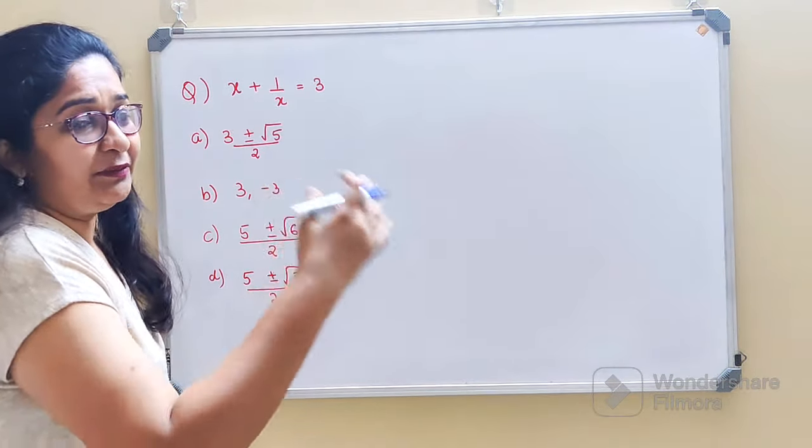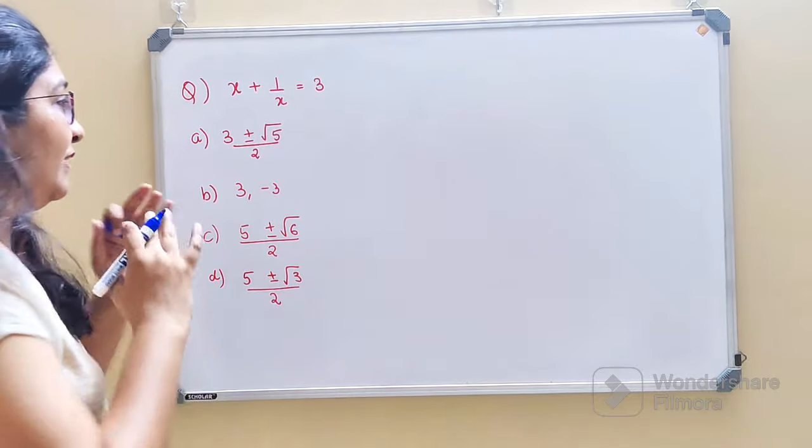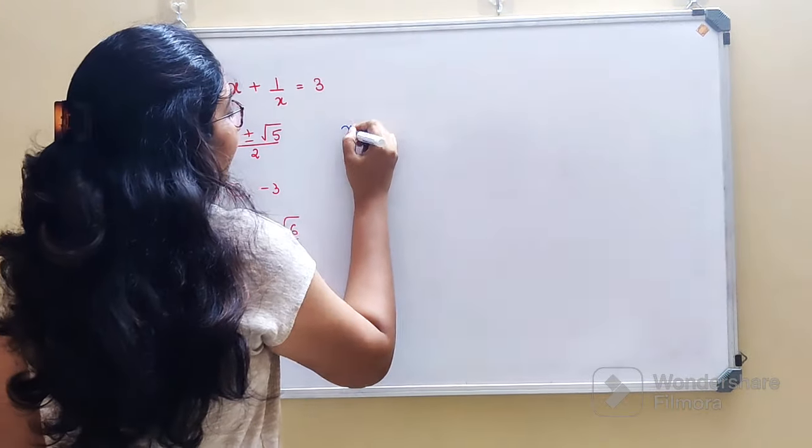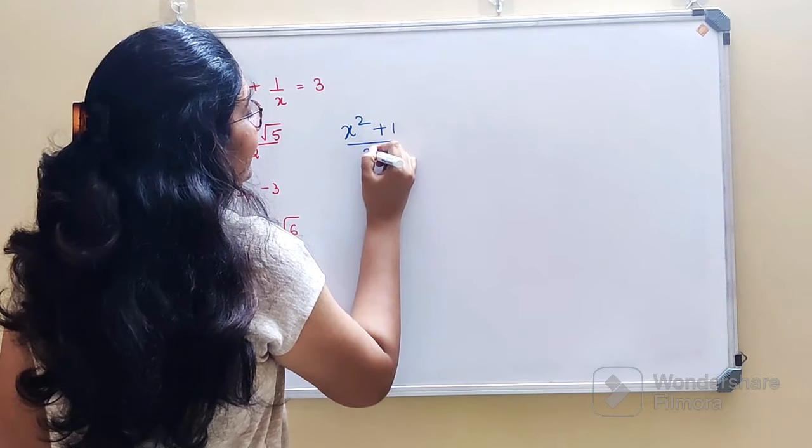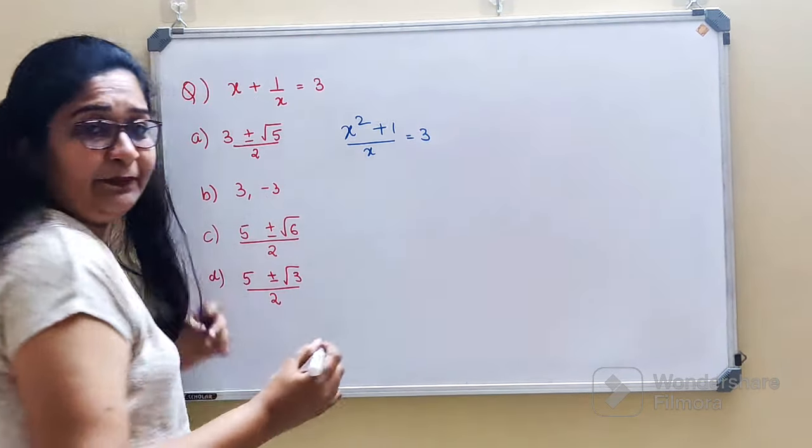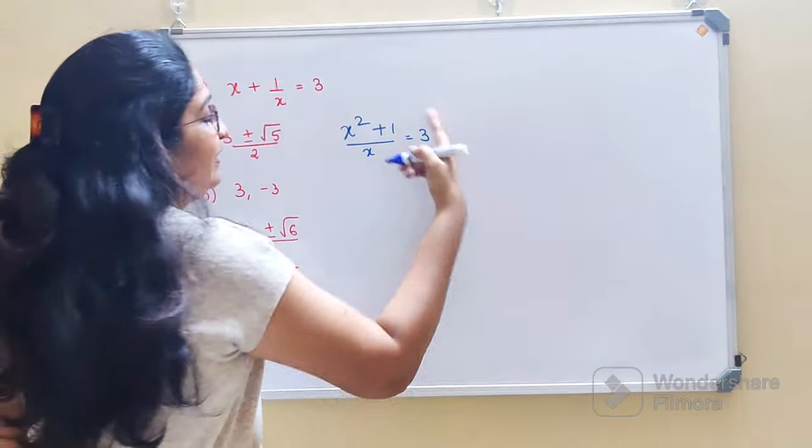Let's understand how to do this. First, what we'll do is x plus 1 upon x is equal to 3, that is what they have given us. So let's take LCM, so we get x squared plus 1 upon x equals to 3.